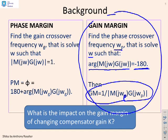And the question we're going to ask here is, what's the impact on this gain margin of changing the compensator gain K? And again, you're reminded that we're going to write M equals K M dash. So within this M of S, there is a scalar gain K, which we're going to change and ask how that affects the gain margin.